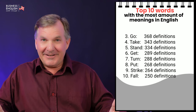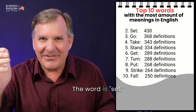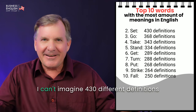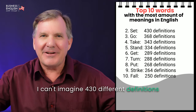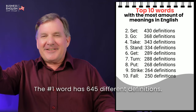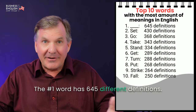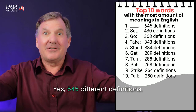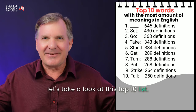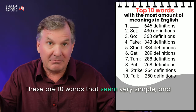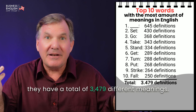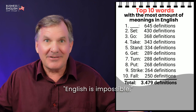At number two, the word is 'set.' Set has 430 different definitions in English — I can't imagine, 430 different definitions. Learning English is impossible. The number one word has 645 different definitions. Yes, 645 different definitions. Before I give you that word, let's take a look at this top ten list. These are ten words that seem very simple, and they have a total of 3,479 different meanings. English is impossible.